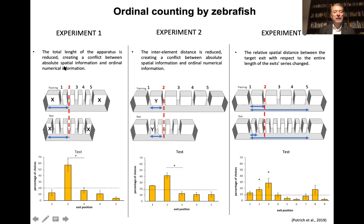So we performed a series of experiments. For instance, in one experiment the total length of the setup was reduced in such a way to create a conflict between absolute spatial information and ordinal numerical information. So during training the second door is the correct one, which is marked by a certain distance with respect to the endpoint. And then the size of these small columns are changed in such a way that the same distance at this point is for the third rather than the second one. But you can see that fish choose correctly on the basis of number, not distance.